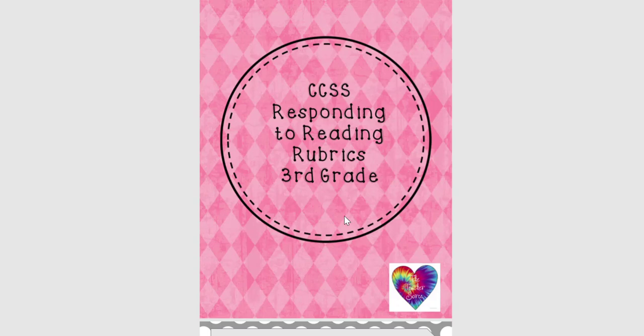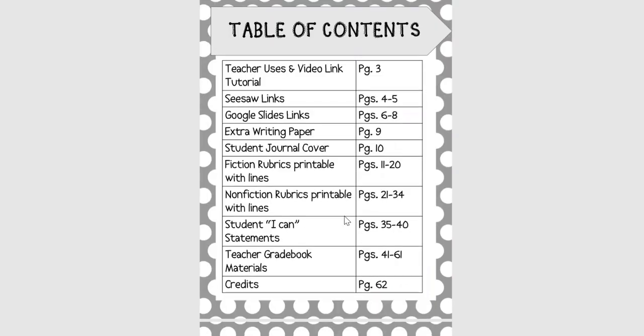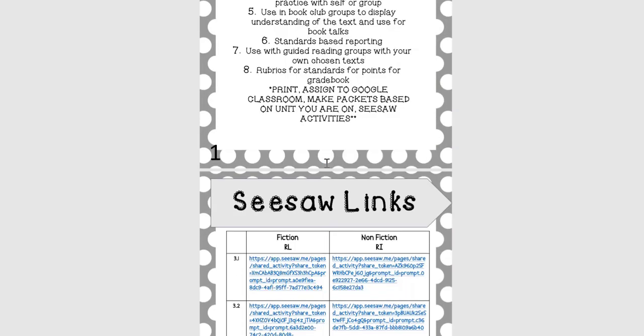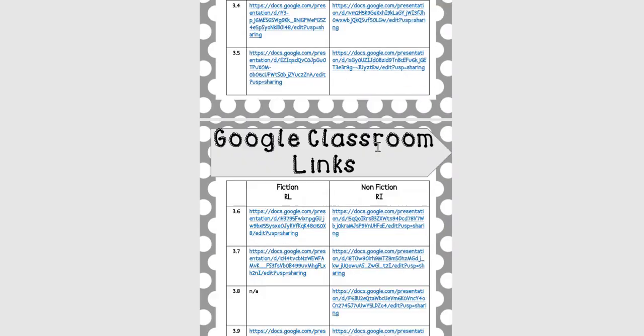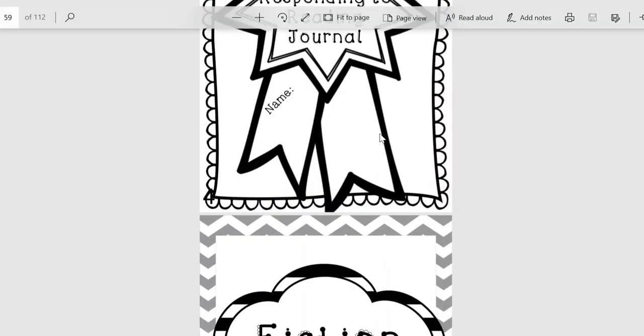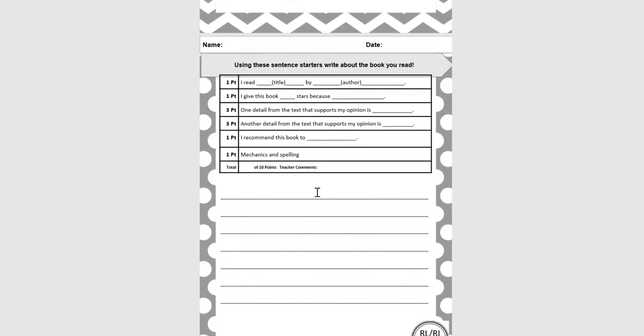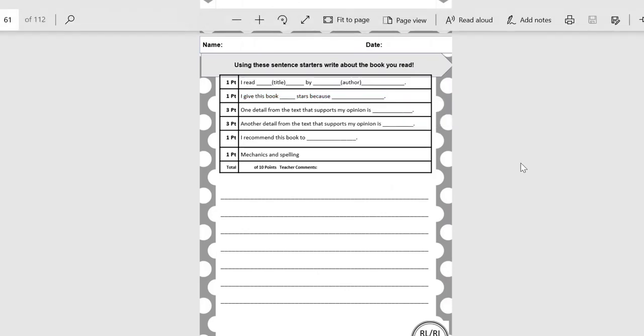The second section covers Common Core Standard Reading and responding-to-reading rubrics, all laid out with a YouTube link showing how to use them, and linked to Seesaw and Google. You can create a journal for kids or hand them out and say, 'Here's what I want you to talk about — here are your sentence starters.' A lot of kids need this guidance, especially in high EL populations. Once they have structure for how to talk, you can take the reins away and they'll be able to discuss using the academic language they've built.